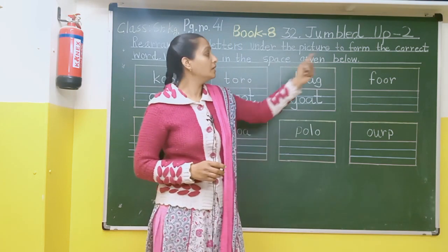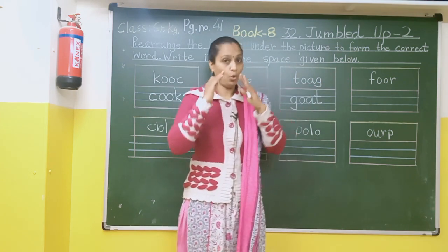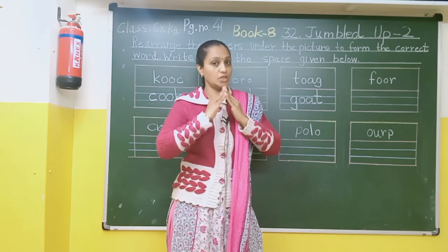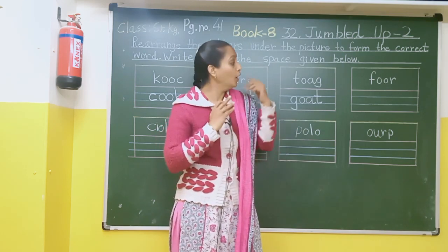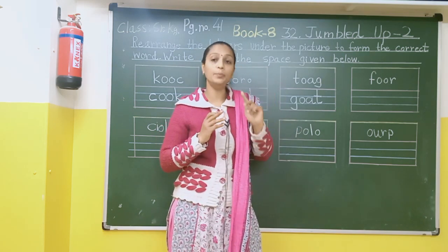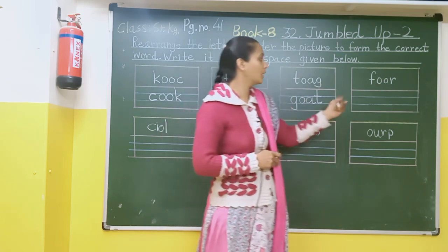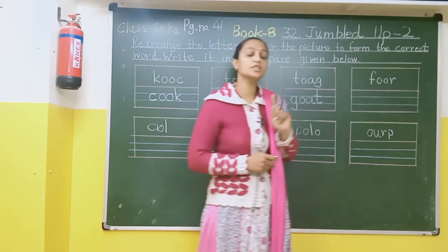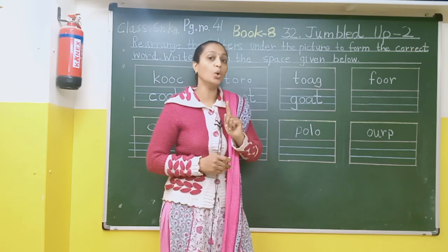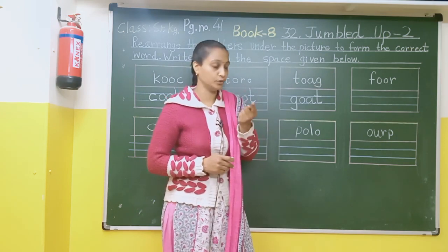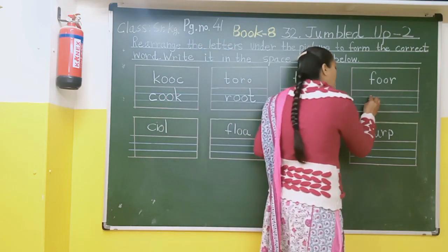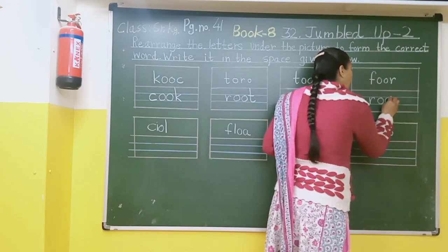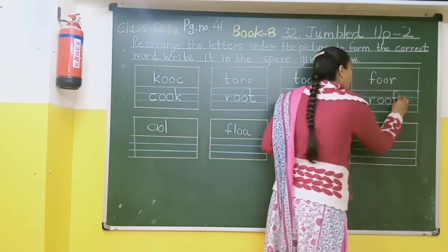After that here there is an image of a home. Here we will find the word ROOF from the jumbled letters. So here we will write R-O-O-F. Roof.